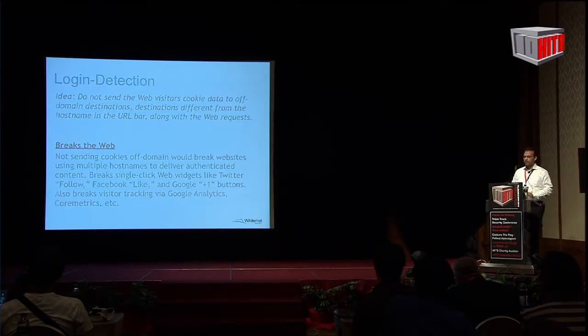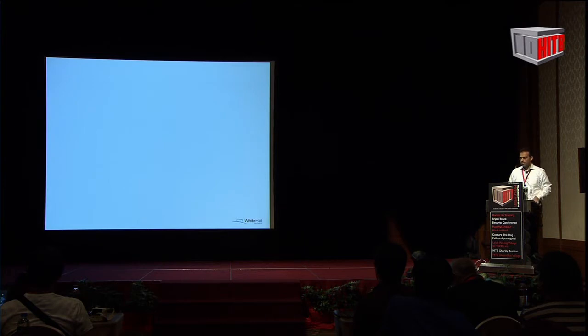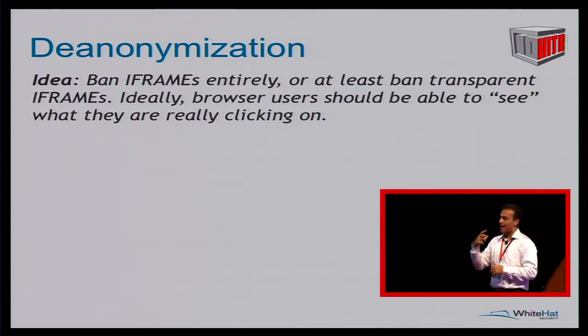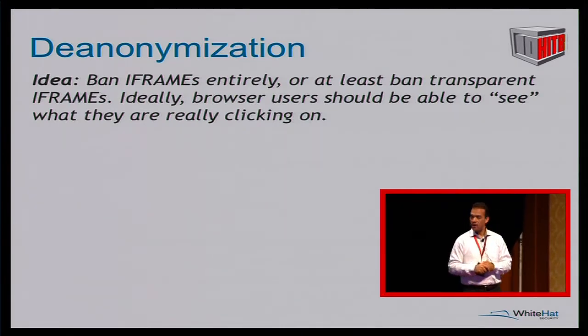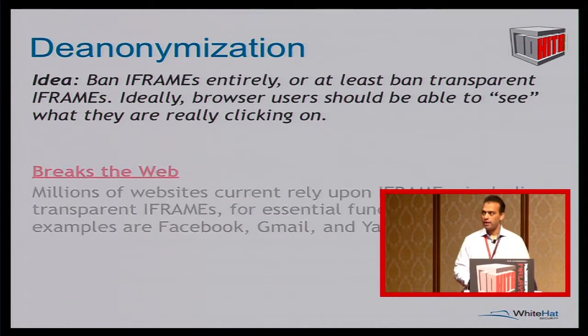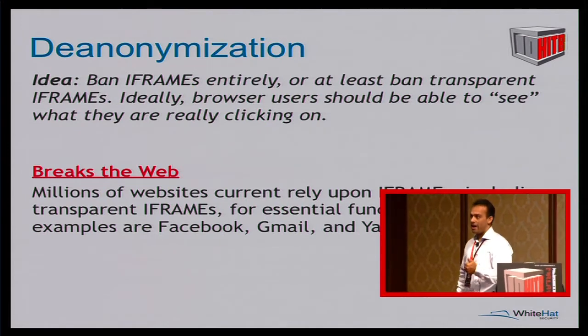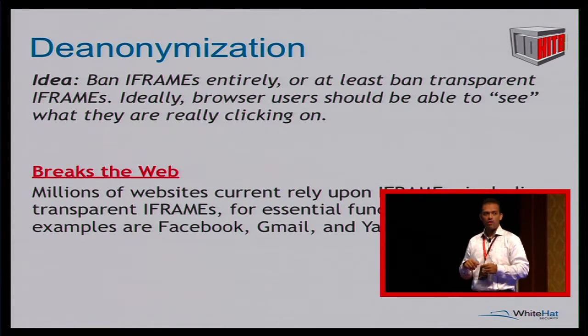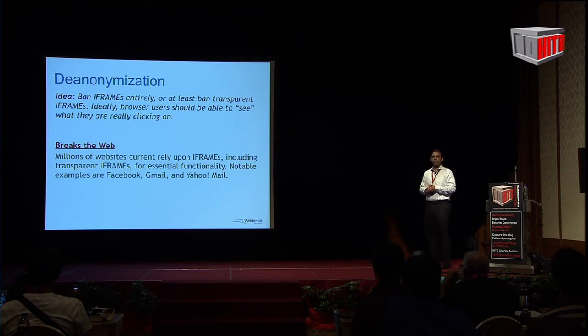To fix de-anonymization the way I described it, you have to fix clickjacking. One way is to ban iframes entirely, or at least ban transparent iframes — ideally, browser users should be able to see what they're actually clicking on. Here's the problem: it breaks the web. Millions of websites currently rely on iframes, including transparent iframes for essential functionality. Notable examples are Facebook, Gmail, and Yahoo Mail. So breaking that functionality would break those services, and users and browser vendors would not like that very much. Complete non-starter too — so we live with that risk.